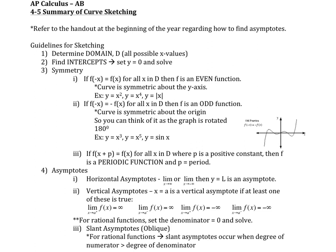So here are some guidelines. It's always good to find the domain first, so you know what possible x-values you can use, then find any intercepts — we can set y equal to zero and solve it — and then determine if there's any symmetry. That would help, so then you can graph part of it and know what the other part will look like. If it's an even function, it'll be symmetric about the y-axis. If it's an odd function, it will be symmetric about the origin — think of x cubed, x to the fifth, etc.